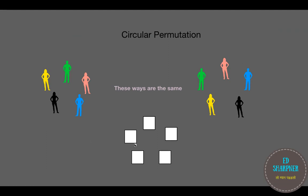Next we have circular permutation. In a circular permutation, unlike linear permutation, we do not have a reference point. To explain that, I have drawn two figures — on the left, five people standing in a circle, and on the right, the same five people standing in a different arrangement. But actually these two ways are considered the same.